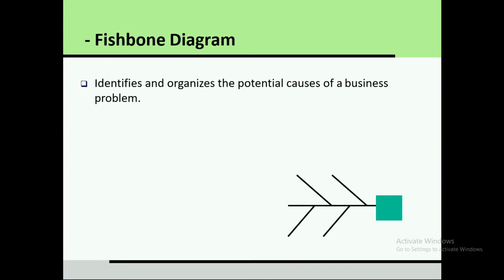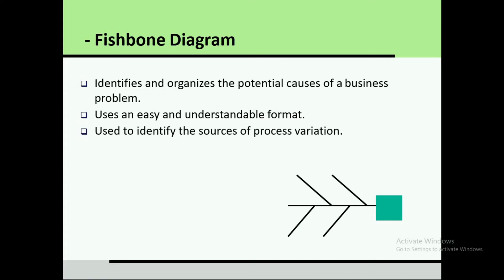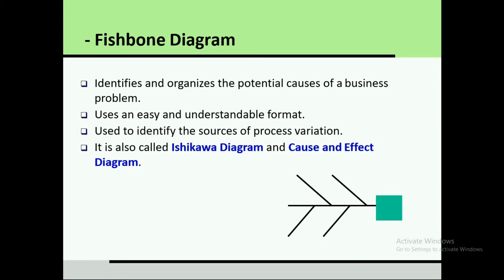The fishbone diagram identifies and organizes the potential causes of a business problem in an easy and understandable format. It is used to identify the source of process variation. If you find the source of variation, you can eliminate it. Nowadays, quality is defined as inversely proportional to variation — if you reduce the variation, the quality will improve.